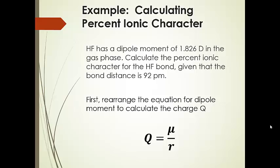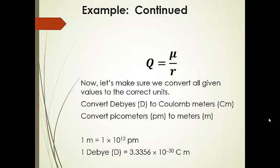Let's calculate percent ionic character using an example. Hydrogen fluoride has a dipole moment of 1.826 Debyes in the gas phase. We're going to calculate the percent ionic character for the HF bond, given that the bond distance is 92 picometers. First, we need to figure out the partial charge. We're given the dipole moment (μ) and the bond distance of 92 picometers, but we're not in the correct units — the bond distance needs to be in meters and the dipole moment needs to be in Coulomb·meters. So let's convert all values to the correct units.